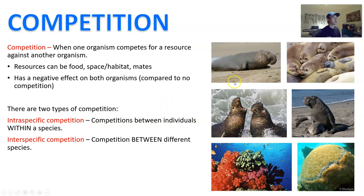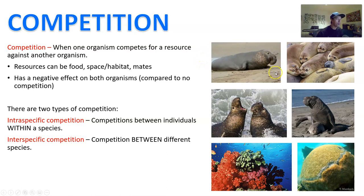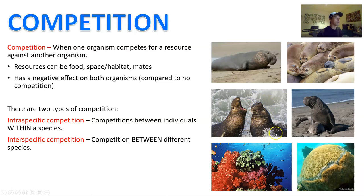For example, elephant seals — one of the largest seals in the world — have males with a giant proboscis nose that dangles like an elephant's trunk. Elephant seals compete for mating rights: one really big adult male is in charge of a harem of females. To keep them and mate with them, he has to ward off all the other males, and the winning male gets the mating rights and passes his genes to the next generation.